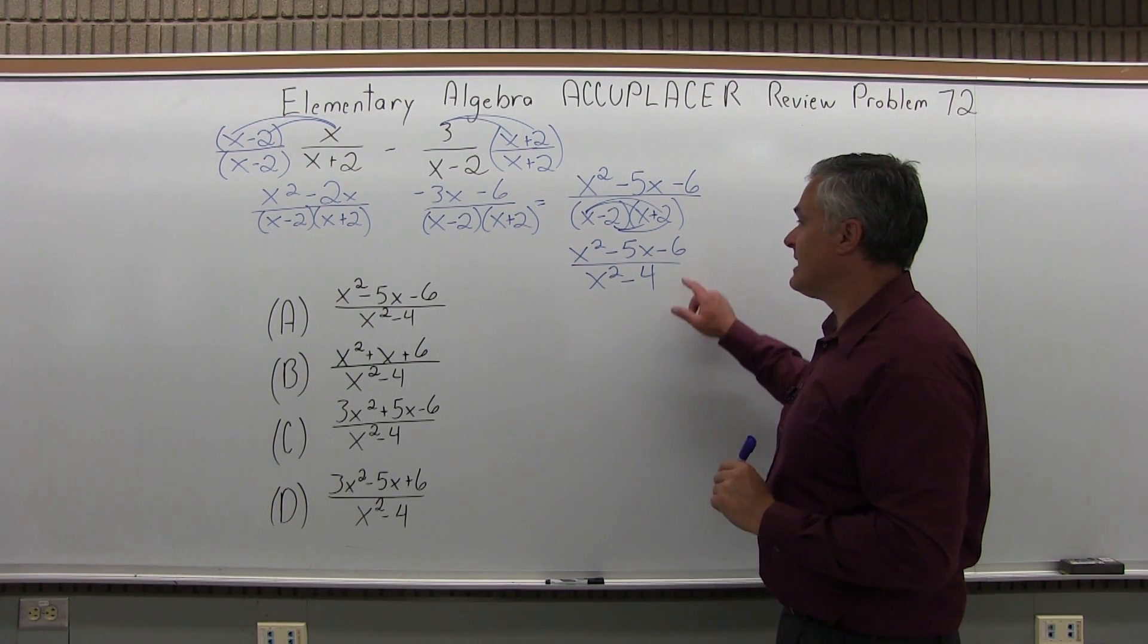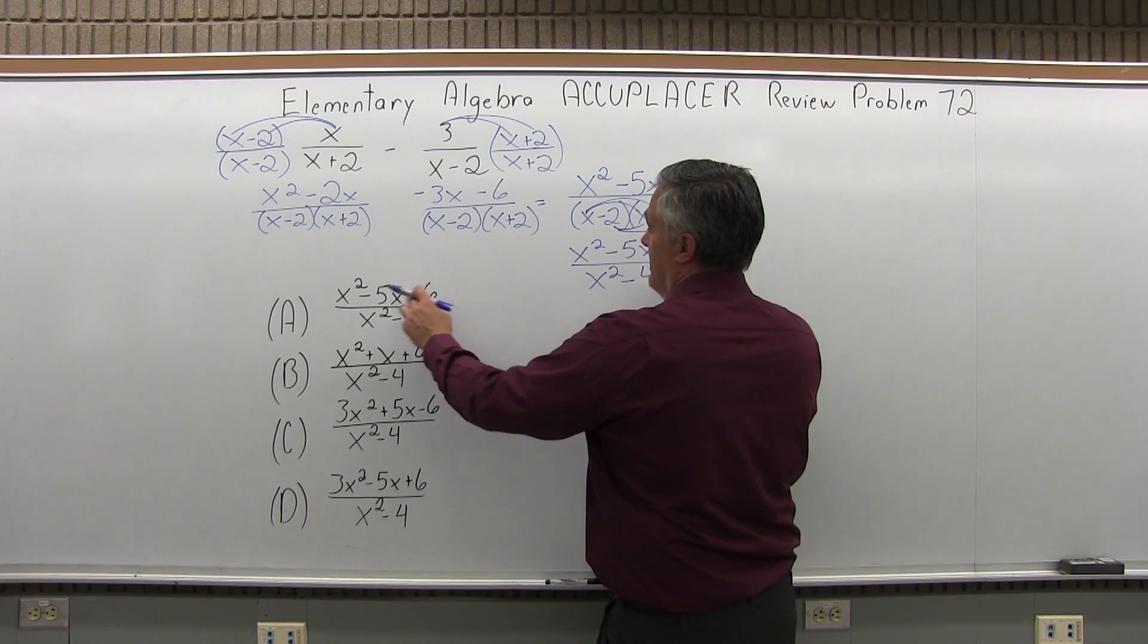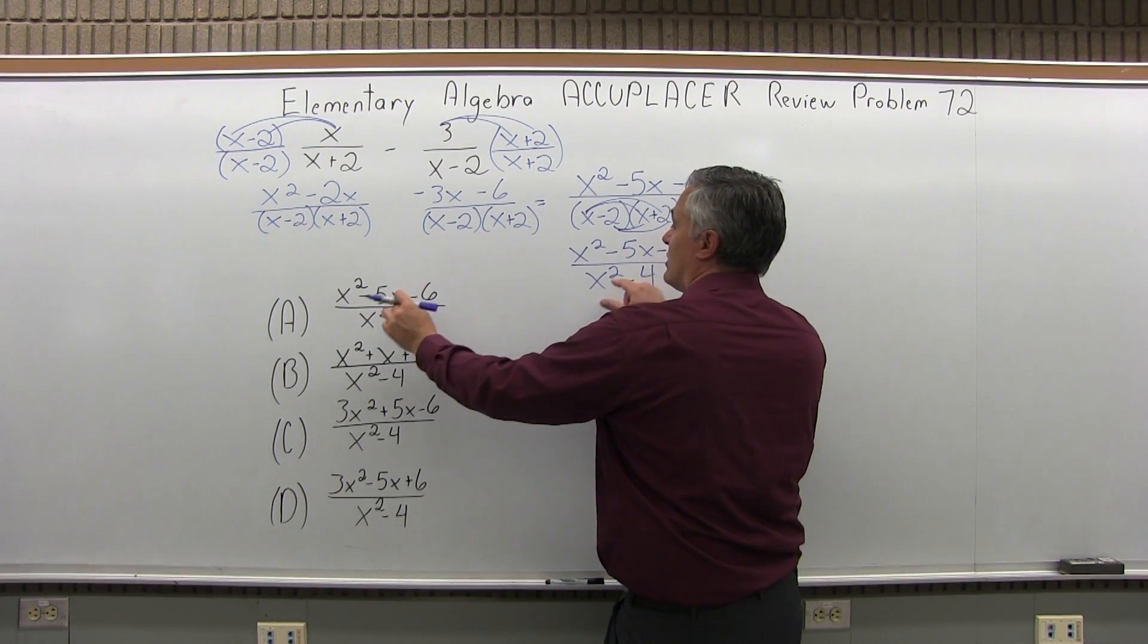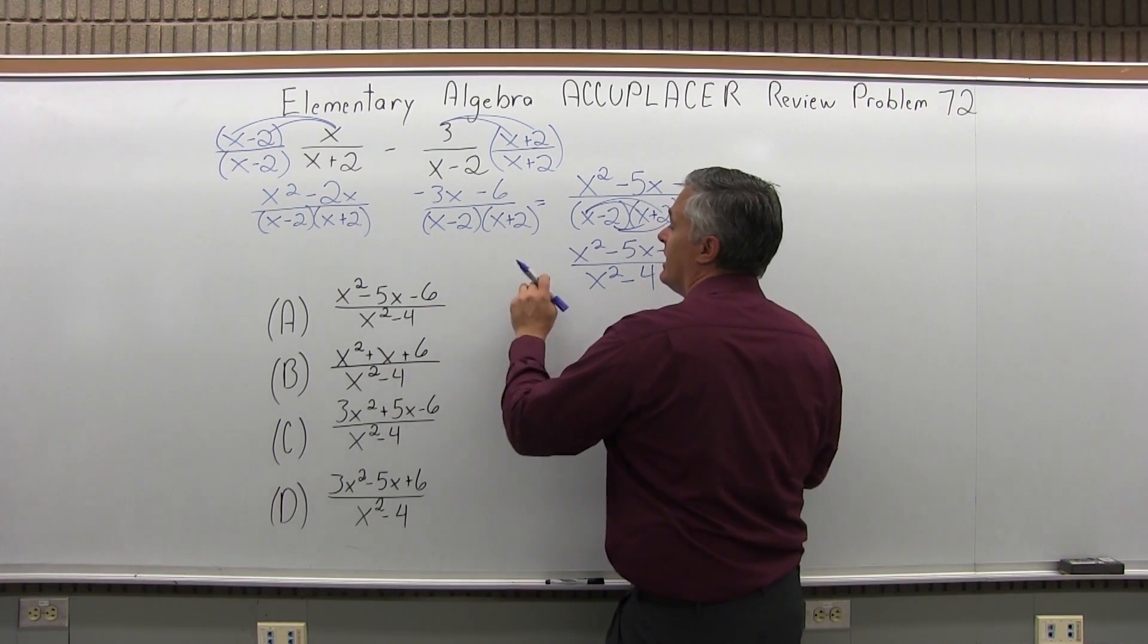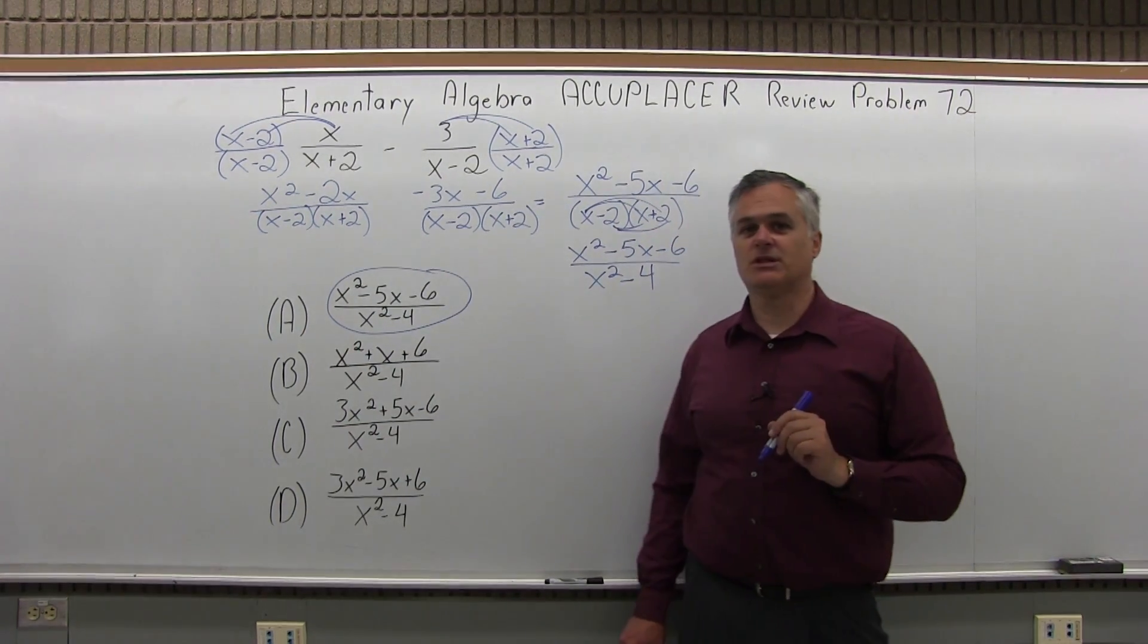Now, as I look, a lot of these look so similar. But the top one, if you pay attention to everything, x squared minus 5x minus 6 over x squared minus 4 is a perfect match for the answer I got, so the answer to this problem is option A.